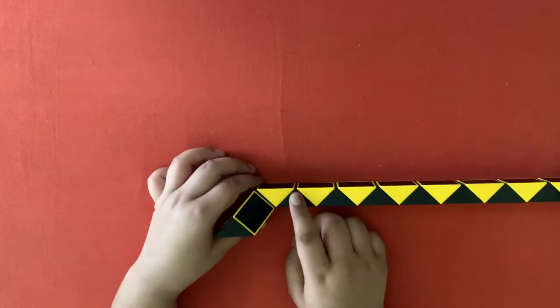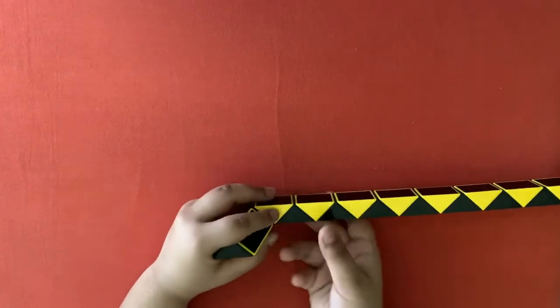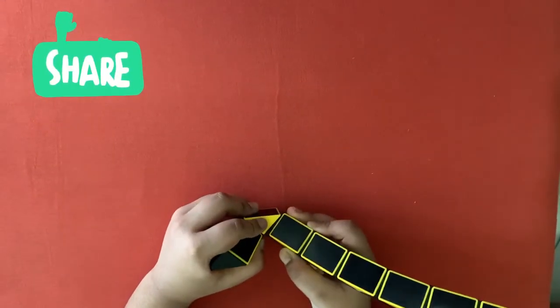Now, again count two pieces: one, two. Take the second piece, rotate it towards you.